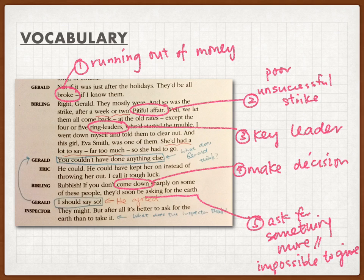The last phrase, 'asking for the earth' — it means asking for something that is impossible to give. If Mr. Burnley didn't stop the workers going on strike, they would ask for more and more that he could not fulfill. Like asking a student not to submit any assignment for the whole year — that is asking for the earth, something impossible to say yes to.